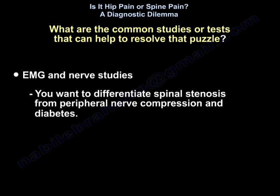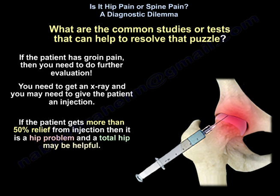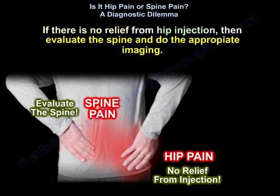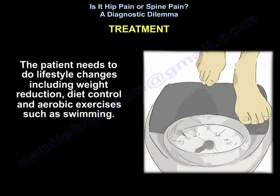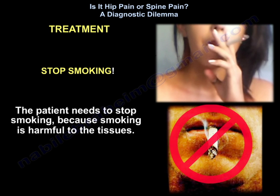If the patient has groin pain, further evaluation is needed — get an X-ray and consider a diagnostic injection. If the patient gets more than 50 percent relief from the injection, it is a hip problem and total hip replacement may be helpful. If there is no relief from the hip injection, evaluate the spine with appropriate imaging. The patient also needs lifestyle changes including weight reduction, diet control, aerobic exercises such as swimming, and smoking cessation.